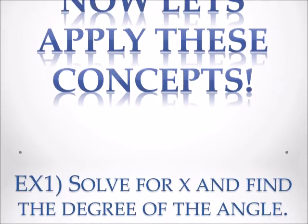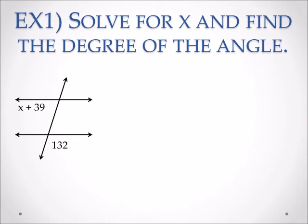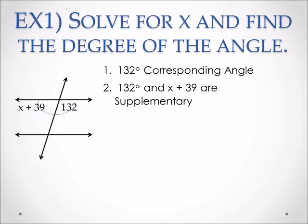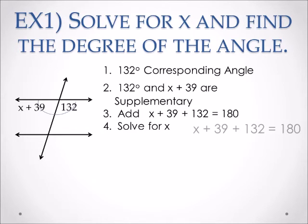Now let's apply these concepts. Example 1: Solve for X and find the degree of the angle. We have two parallel lines cut by a transversal. One angle is X plus 39 and the other is 132 degrees. We know that 132 degrees and X plus 39 are supplementary angles because they are along the straight line, so we add them to 180 degrees. Combining like terms, 39 plus 132 gives you 171, then subtract 171 from both sides to get X equals 9.